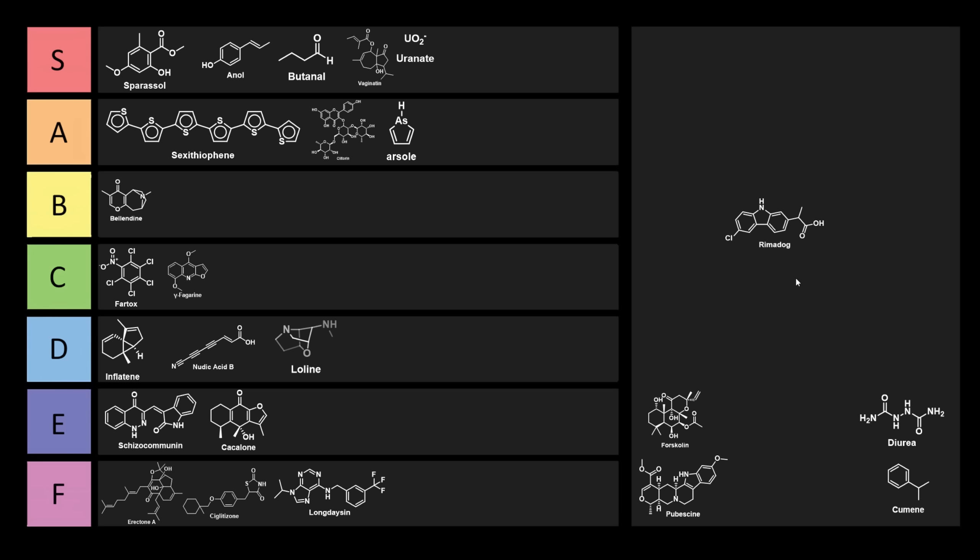And so this is a COX inhibitor for dogs, and so Rimadog, it's used in veterinary medicine. When you're thinking of a medication, the one thing you don't want to be thinking about is rimming a dog. So that one can go right into S tier. That is probably the most unfortunate name on here, and I laughed out loud when I saw that one.